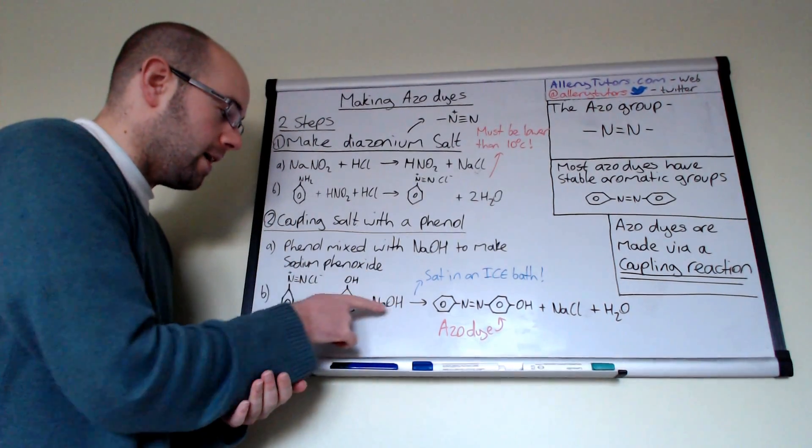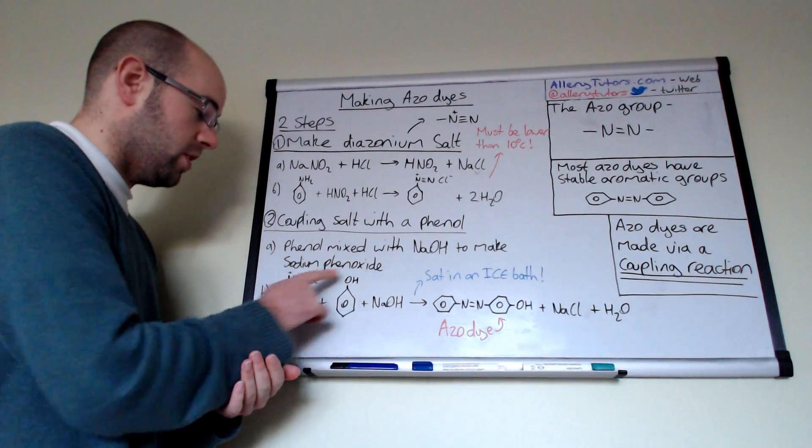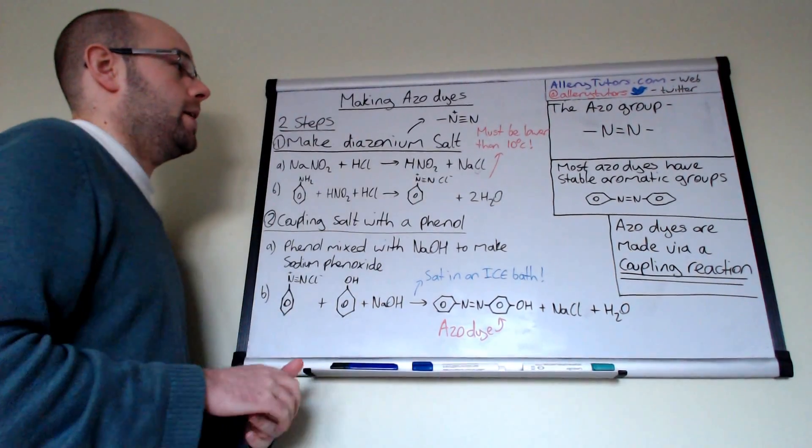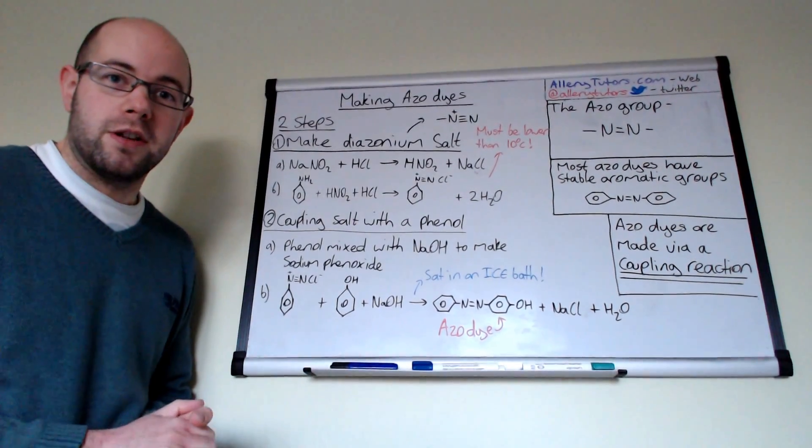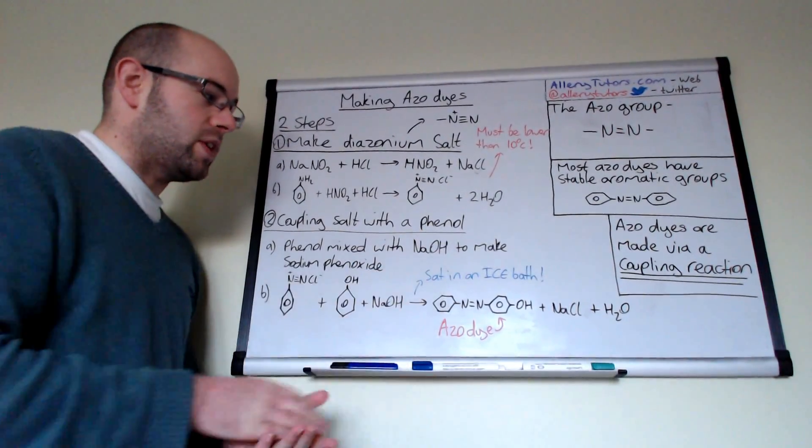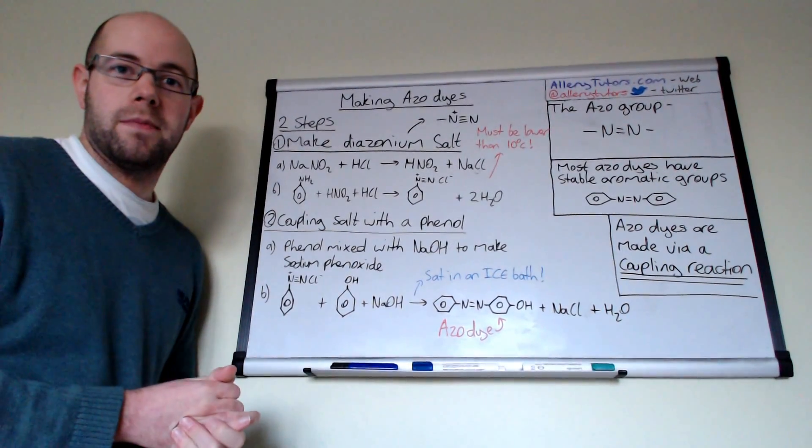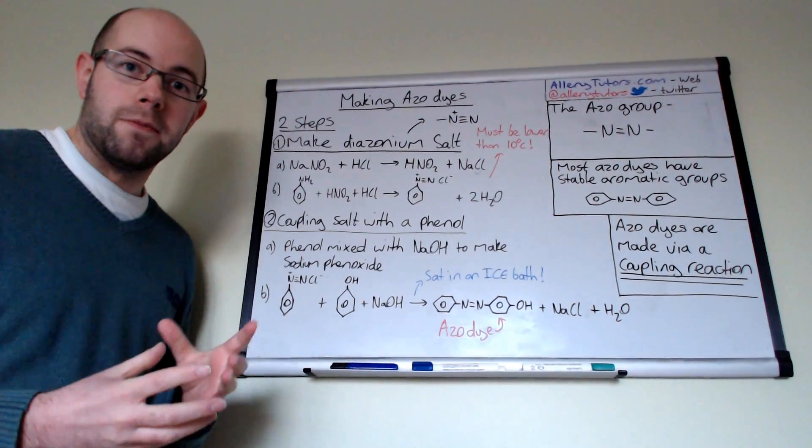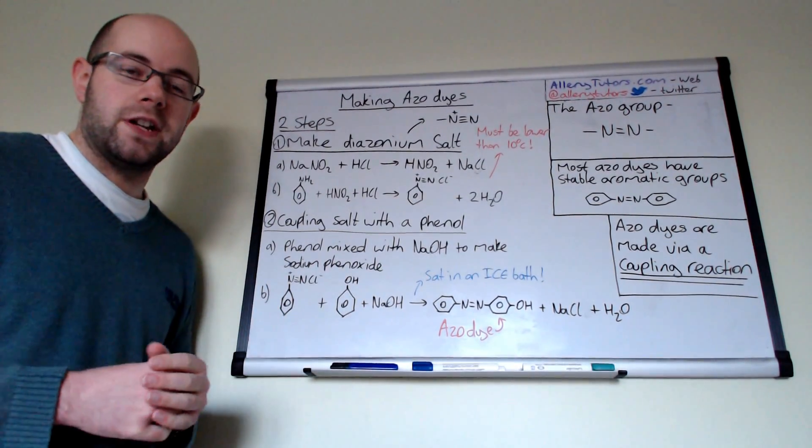If we take this stage here, your sodium phenoxide, and then you react that with your diazonium salt that you made in the first step, then what you make is your azo dye. Again, all of this is sat in the ice bath. The reasons are to stop this salt from decomposing and forming a phenol instead.